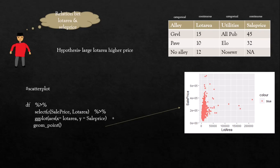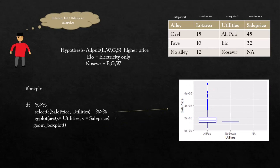Now suppose we want to understand the relationship between the utilities variable and sale price. Utilities means the facilities available in the house: AllPub means electricity, water, gas, and sewer are all available. NoSewr means three utilities are available except the sewer tank. The hypothesis is: if all facilities are available, the house price will be higher.